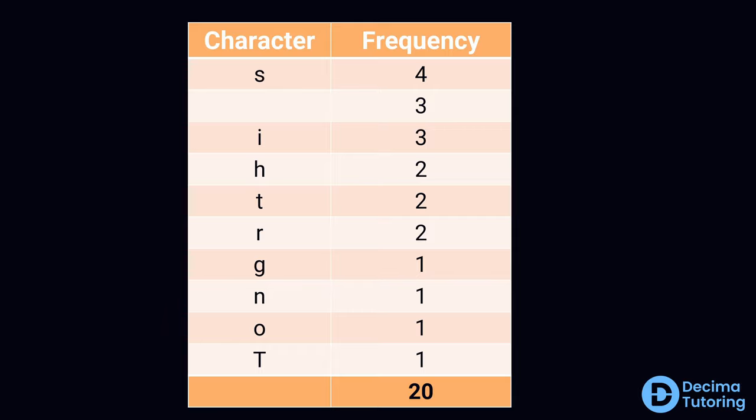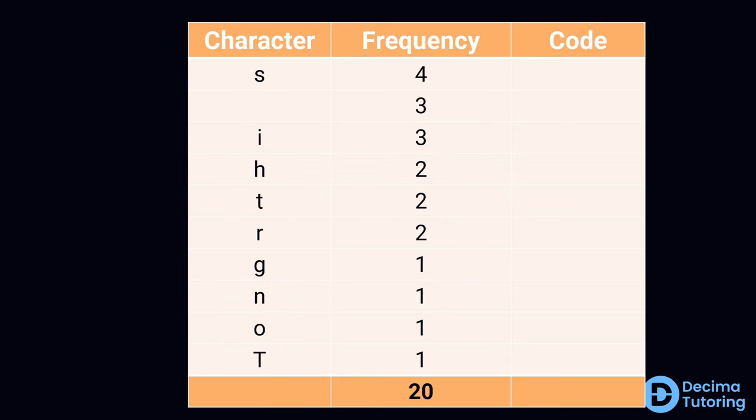Next we add in a third column which we'll call the code. This code column will be the bits allocated to represent the character. In order to generate a Huffman code, we apply an algorithm which starts with taking the two smallest frequencies here at the bottom of the table corresponding to the characters O and capital T. We go ahead and merge them. We add the frequencies together, so the original frequencies were 1 and 1 so they add together to make 2, and then the code is updated with 0 and 1, where 0 is allocated to the top character and 1 is allocated to the bottom character of the merged characters.